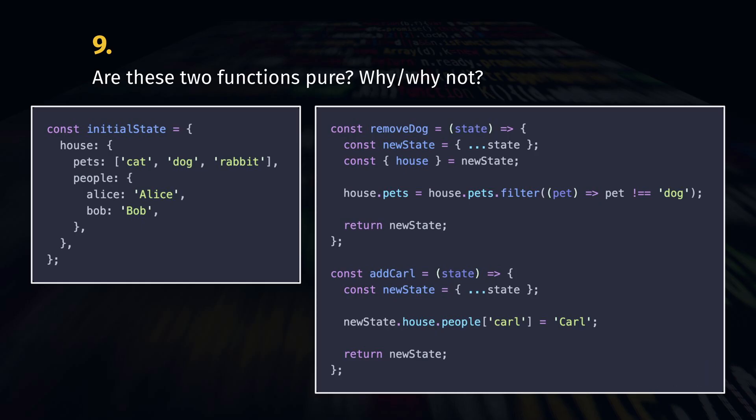No, they aren't pure. Even though we properly copy the state object, that copy is not deep. The house still refers to the old object. Similarly here, the state is a new object but the properties house and people still refer to the old object.